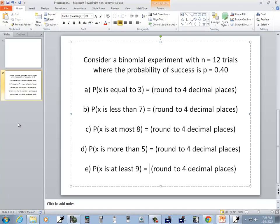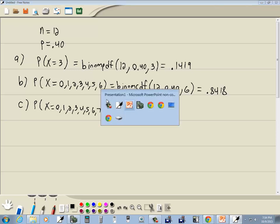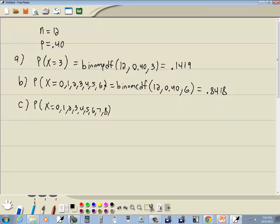Part c says probability x is at most 8. That means we're going to go 0, 1, 2, 3, 4, 5, 6, 7, and 8. At most 8 means it's not going past 8, but it includes 8. This previous one is less than 7 - notice it did not include 7. In case you're wondering, this is equal to k, this is the less than k, and this is the less than or equal to k.